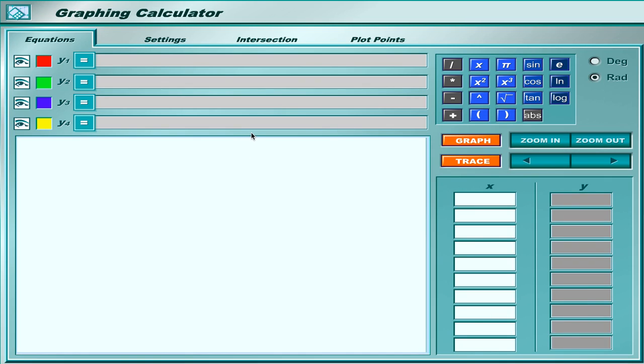This is a tutorial for how to use the online graphing calculator link that you were given. A few things that you're going to notice in this window: this area right here in the upper left-hand corner are the places where you will enter in the equations for the lines that you want to graph.